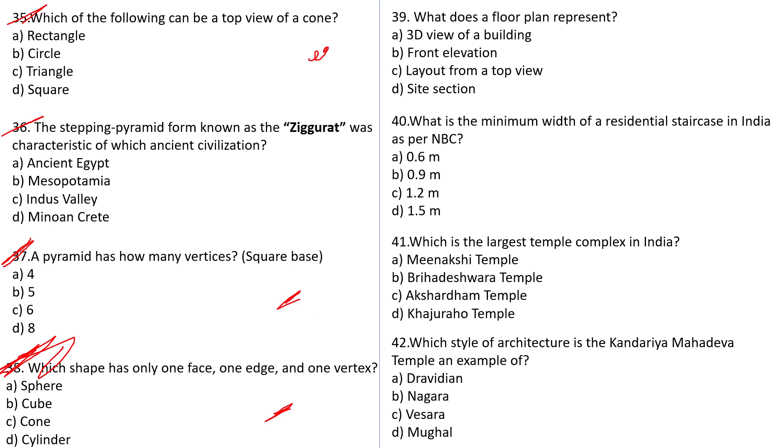Question number 39: What does a floor plan represent? Options: 3D view of a building, front elevation, layout from a top view, or side section. The correct answer is layout from a top view. Question number 40: What is the minimum width of a residential staircase in India as per NBC? It is 0.9 meter — you might not know this yet but the minimum is 0.9 meter. Question number 41: Which is the largest temple complex in India? Options: Meenakshi temple, Brihadeshwara temple, Akshardham temple, or Khajuraho temple. Try to answer — it's an easy question.